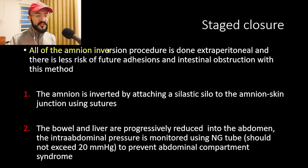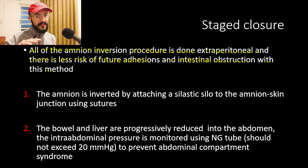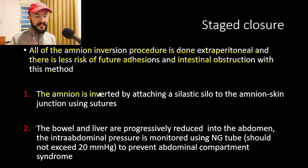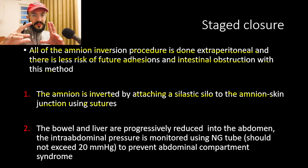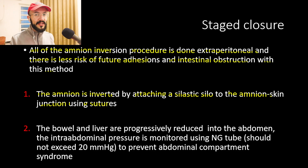The amniotic sac inversion procedure is performed extra-peritoneally, with less risk of future adhesions and intestinal obstruction. The first step is inverting the amniotic sac by attaching a Silastic silo to the amniotic-skin junction using sutures. The Silastic silo is a silicone bag attached to the edges of the amniotic-skin junction, which progressively reduces the sac.